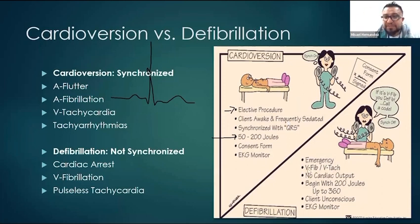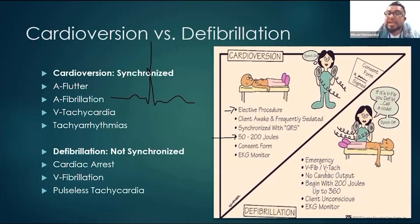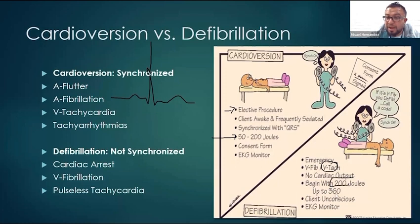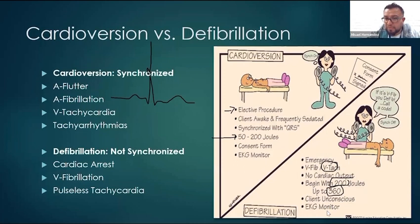It's for emergency VFib and VTAC — pulseless VTAC with no cardiac output. Begin with 200 joules. Notice that the joules is a lot higher than it is for your regular cardioversion. The client is unconscious, and of course we still do ECG monitoring.